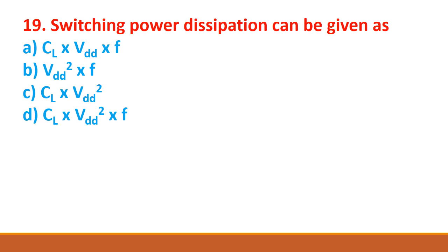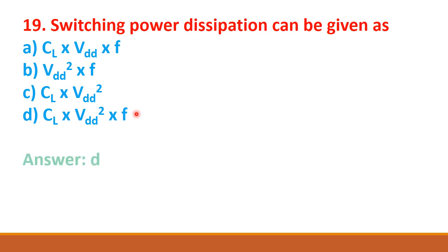Next question: switching power dissipation can be given as CL into VDD into F, where F is the frequency, VDD is the supply voltage, and CL is the load capacitance. Four formulas are given; the switching power dissipation is given by option D: CL × VDD² × F.